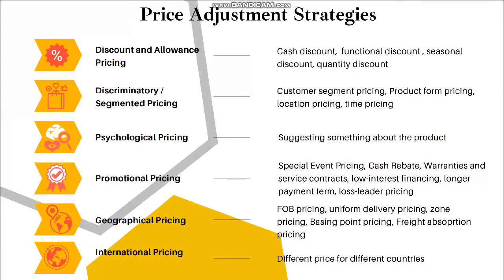There are several price adjustment strategies. The first is discount and allowance pricing. Examples include cash discount, functional discount, seasonal discount, and quantity discount.